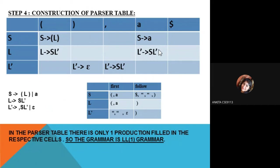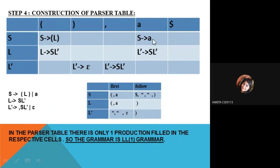The main step is constructing the parser table. In the parser table, terminals are in the columns and variables are in the rows. For variable S, its FIRST contains the first bracket and terminal A. We fill the productions which produce these particular terminals in the respective cells. For example, for variable S, the production S → (L) is placed in the first-bracket column, and S → A is placed in the A column.